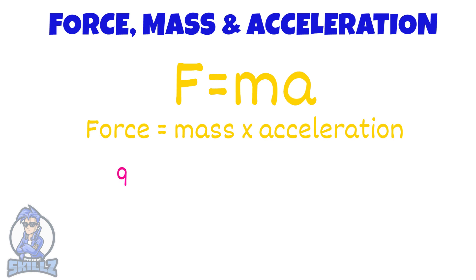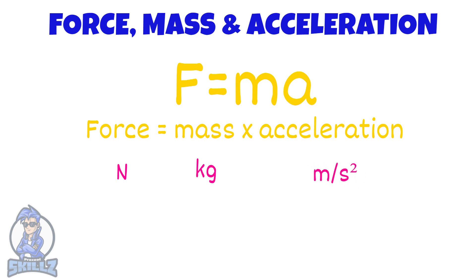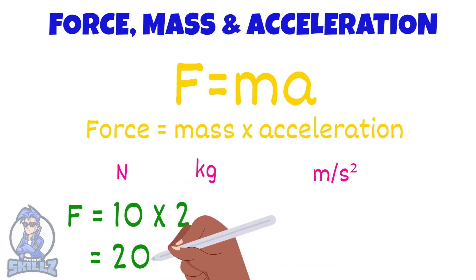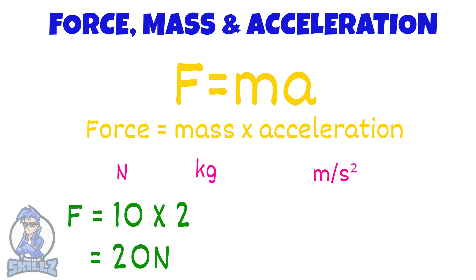The units of force is newtons, mass is kilograms, and acceleration is meters per second squared. So if an object has a mass of 10 kilograms and an acceleration of 2 meters per second squared, then the force that has to be applied would be 10 into 2, which is 20 newtons.